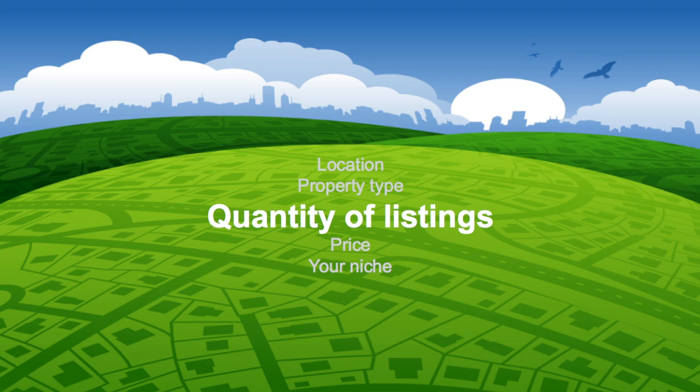While setting up your markets, you'll get a real-time count of listings available using your current search criteria. This number should guide your market setup. For instance, if the area you specified has no listings for sale, you should consider removing some criteria to make sure your search will provide results. If you have over 300 listings, you might want to consider splitting your market into two or even three separate markets. Additional criteria to help narrow searches include bedrooms, bathrooms, minimum square feet, and minimum lot size.